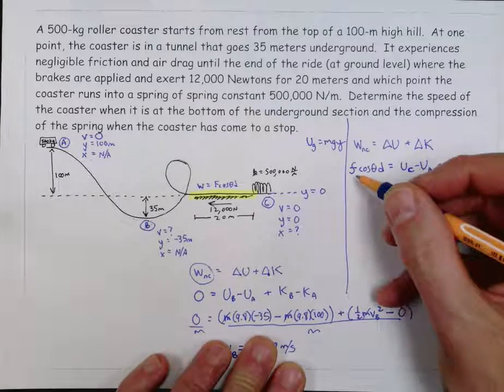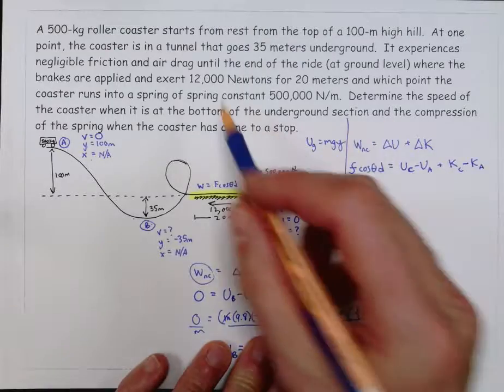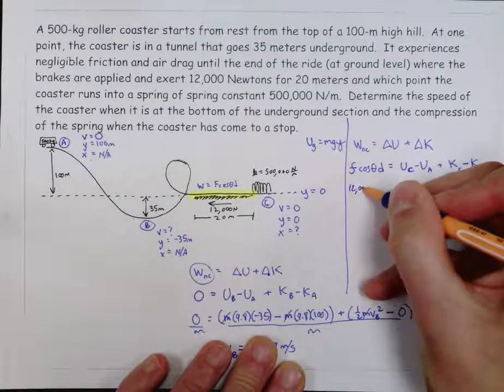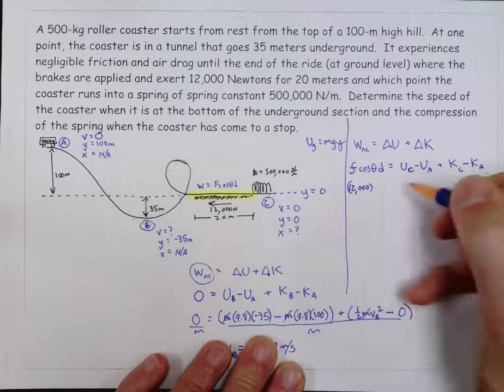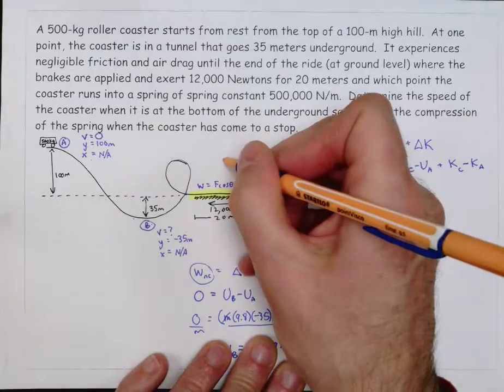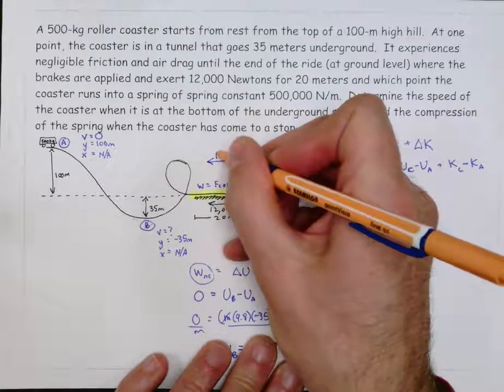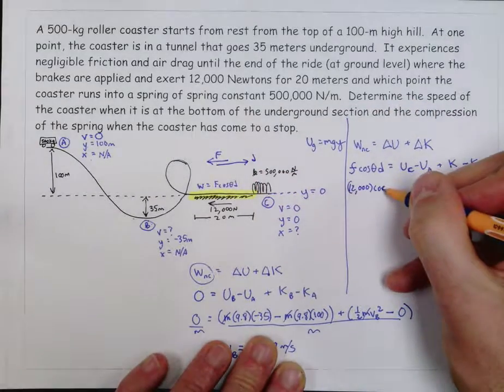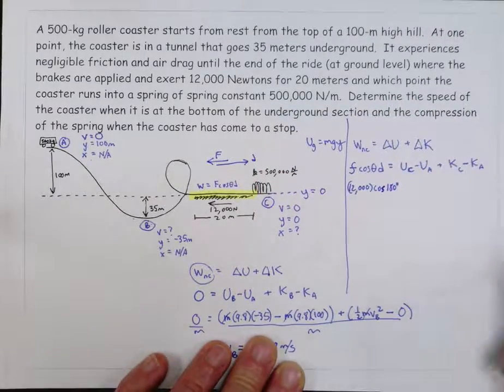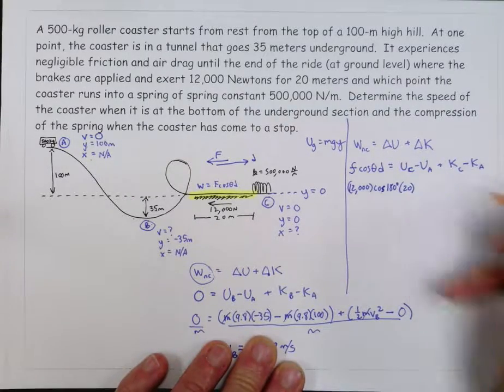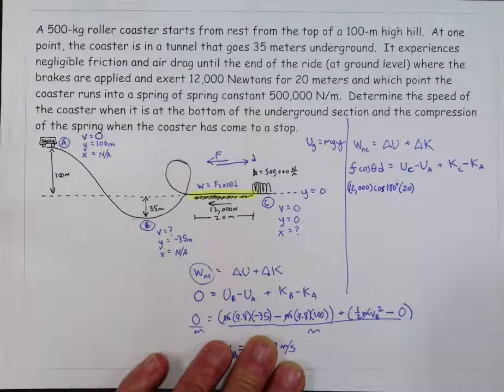So I think the force of friction is given here. Yes, 12,000 newtons. So 12,000 newtons is the force that the brakes exert. The angle here, well, you know, to stop something, the force has to be that way. But the way that it's moving is that way. And so that's 180 degrees apart. So we're going to use cosine of 180. And the distance that's given for that is 20. So that's what goes on the left-hand side of my equation.